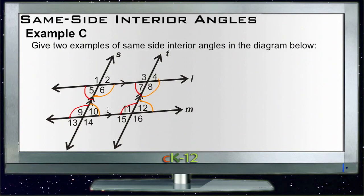We could probably go the other way too. If we thought of these two lines as our parallels and our transversal this way, we could also say that 10 and 11 were same-side interior and 6 and 7 were same-side interior.